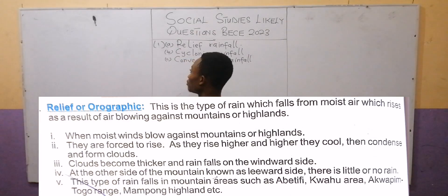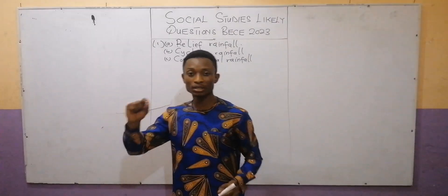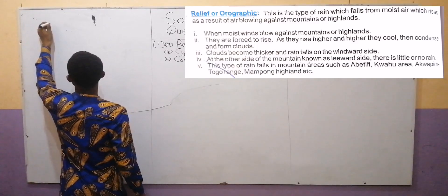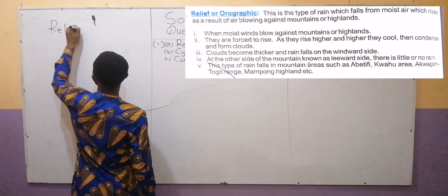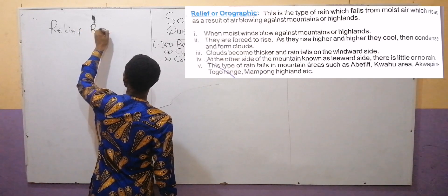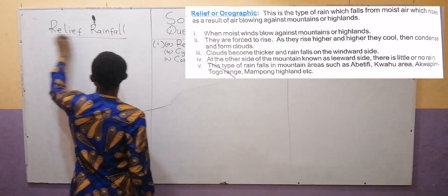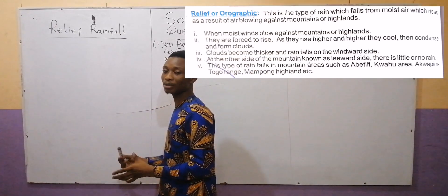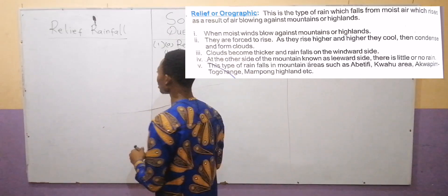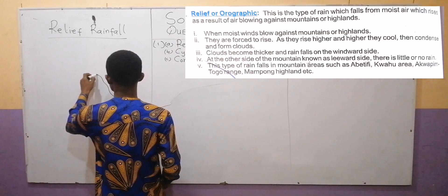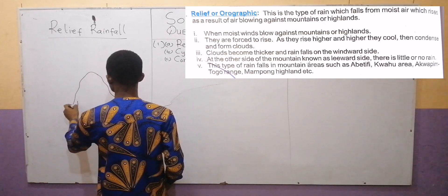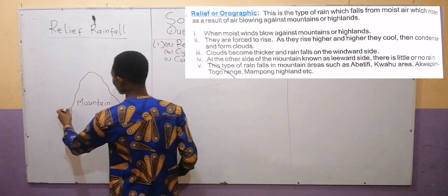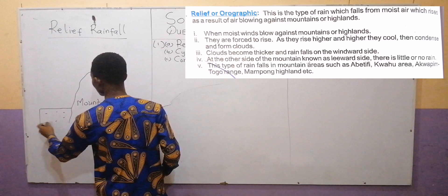Let's sketch that down for relief rainfall. The essay part of the rainfall is placed on the screen to assist. So in the diagram: the presence of a water body, warm air rising from the water body toward a mountain — so this will be a highland, we call this the mountain — and the water body closer to it, we call this the sea.